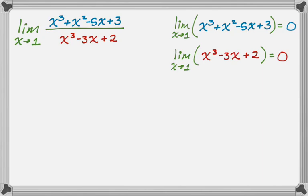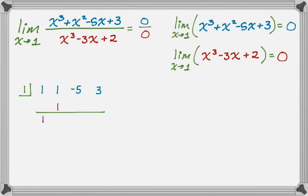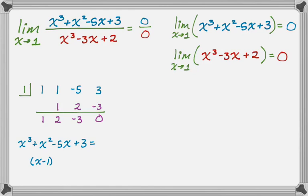I'd have to factor cubics, and I do not like doing that, so I'm going to use synthetic division. I put 0 over 0 there, and 1 goes in the box. The coefficients of the numerator are 1, 1, negative 5, and 3. Drop down the 1, multiply to get 1, add to get 2, multiply to get 2, add to get negative 3, multiply to get negative 3, add to get 0 — which confirms it works. So I can rewrite the numerator x cubed plus x squared minus 5x plus 3 as x minus 1 times x squared plus 2x minus 3.